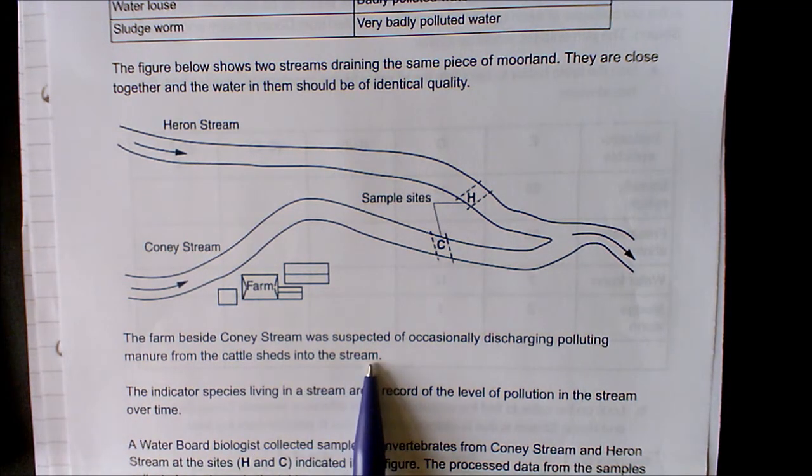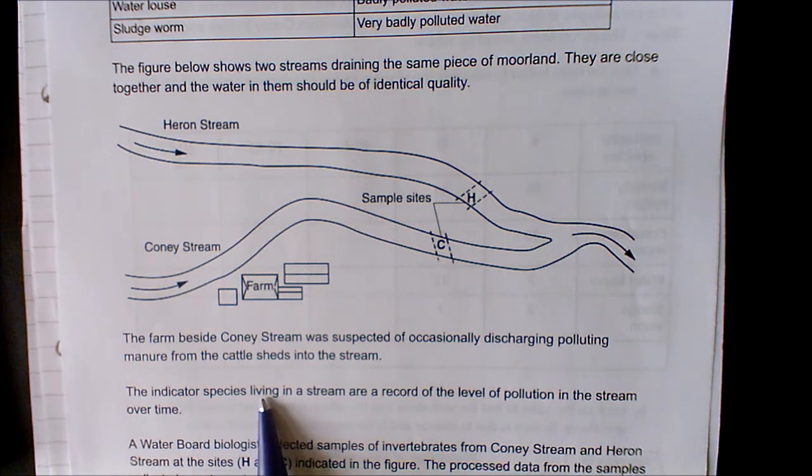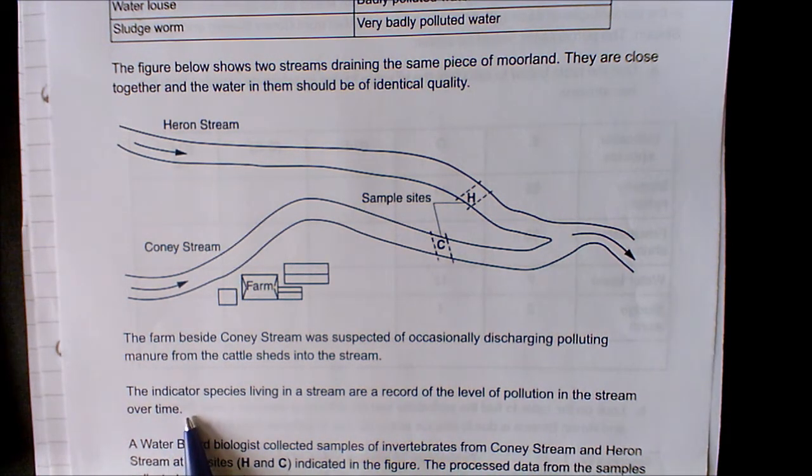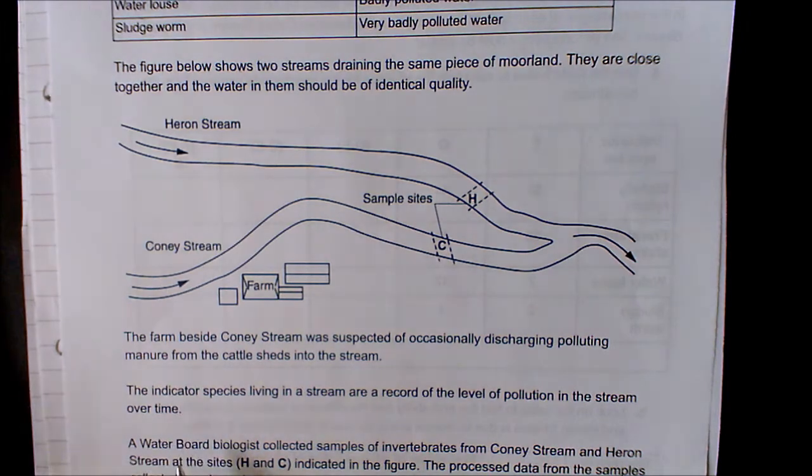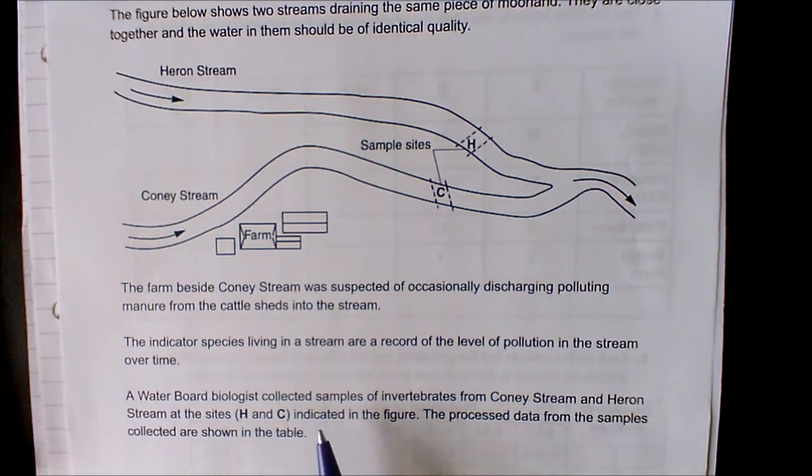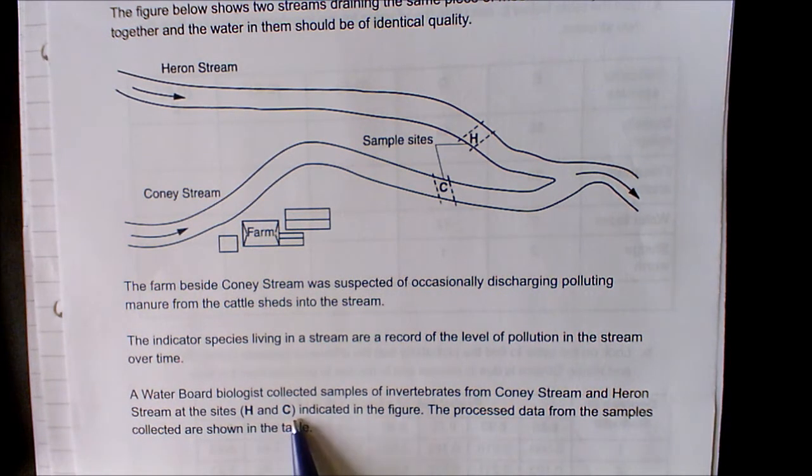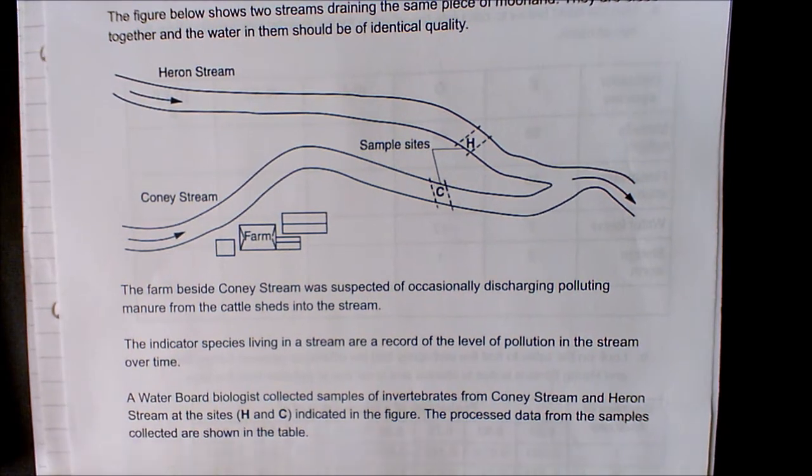It says the farm beside Coney Stream was suspected of occasionally discharging polluting manure from the cattle sheds into the stream. The indicator species living in a stream are a record of the level of pollution in the stream over time. The water board biologists collected samples of invertebrates from Coney Stream and Heron Stream at the sites H and C.